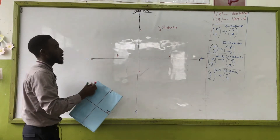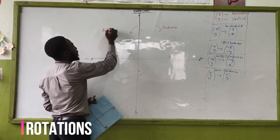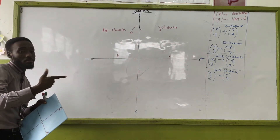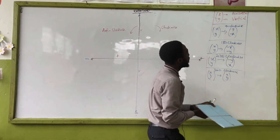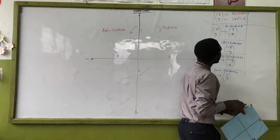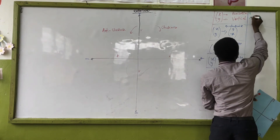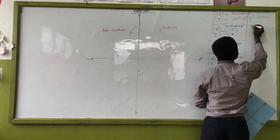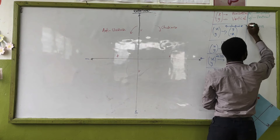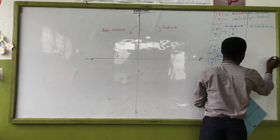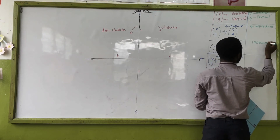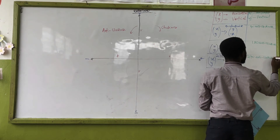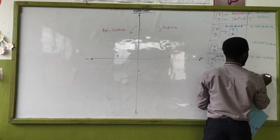Now let's try the anti-clockwise direction as well. We use the same conceptual idea. So we set up our table: x, y as horizontal versus vertical. We'll work through 90° anti-clockwise, 180° anti-clockwise, 270° anti-clockwise, and 360° anti-clockwise.